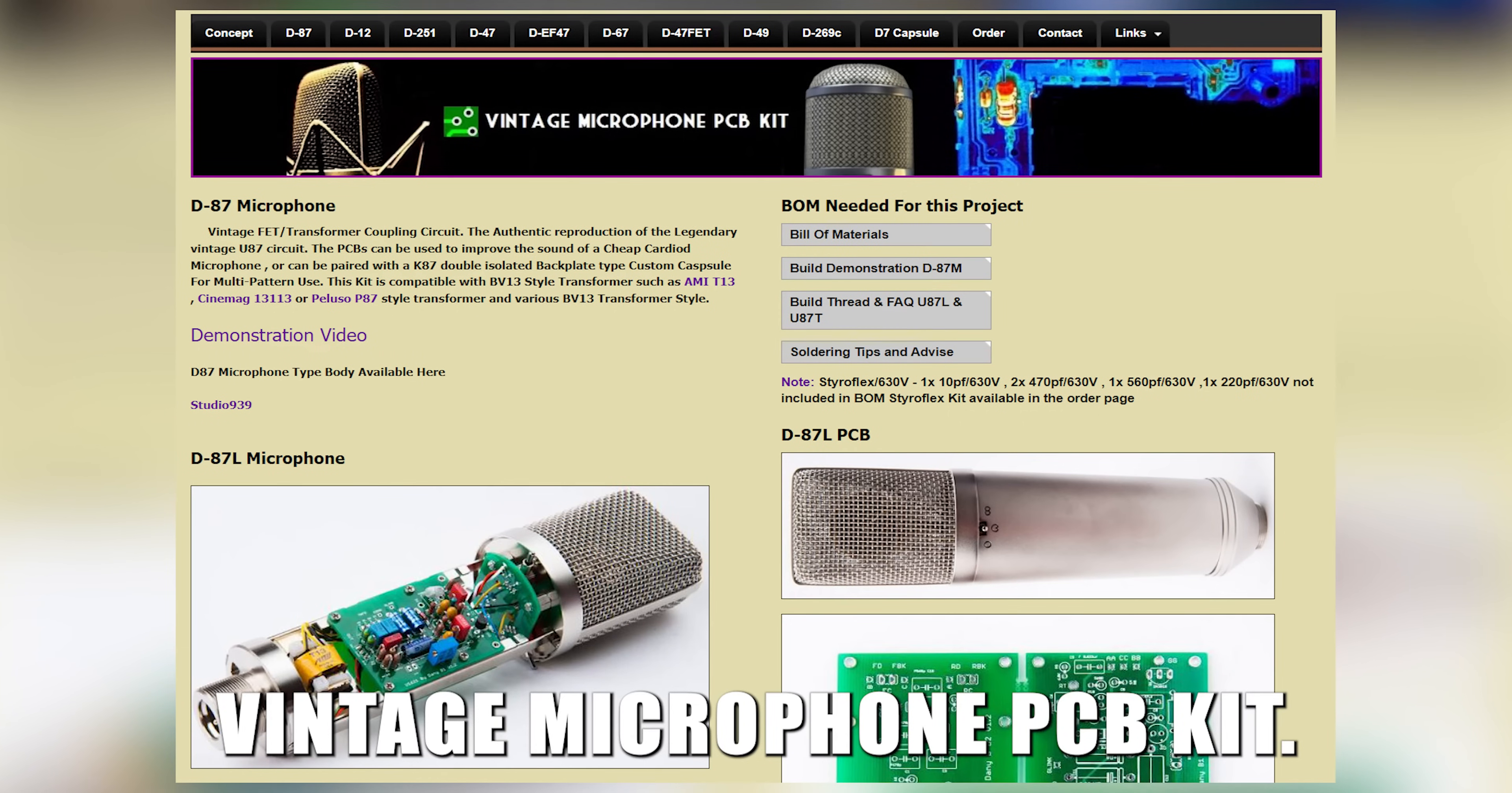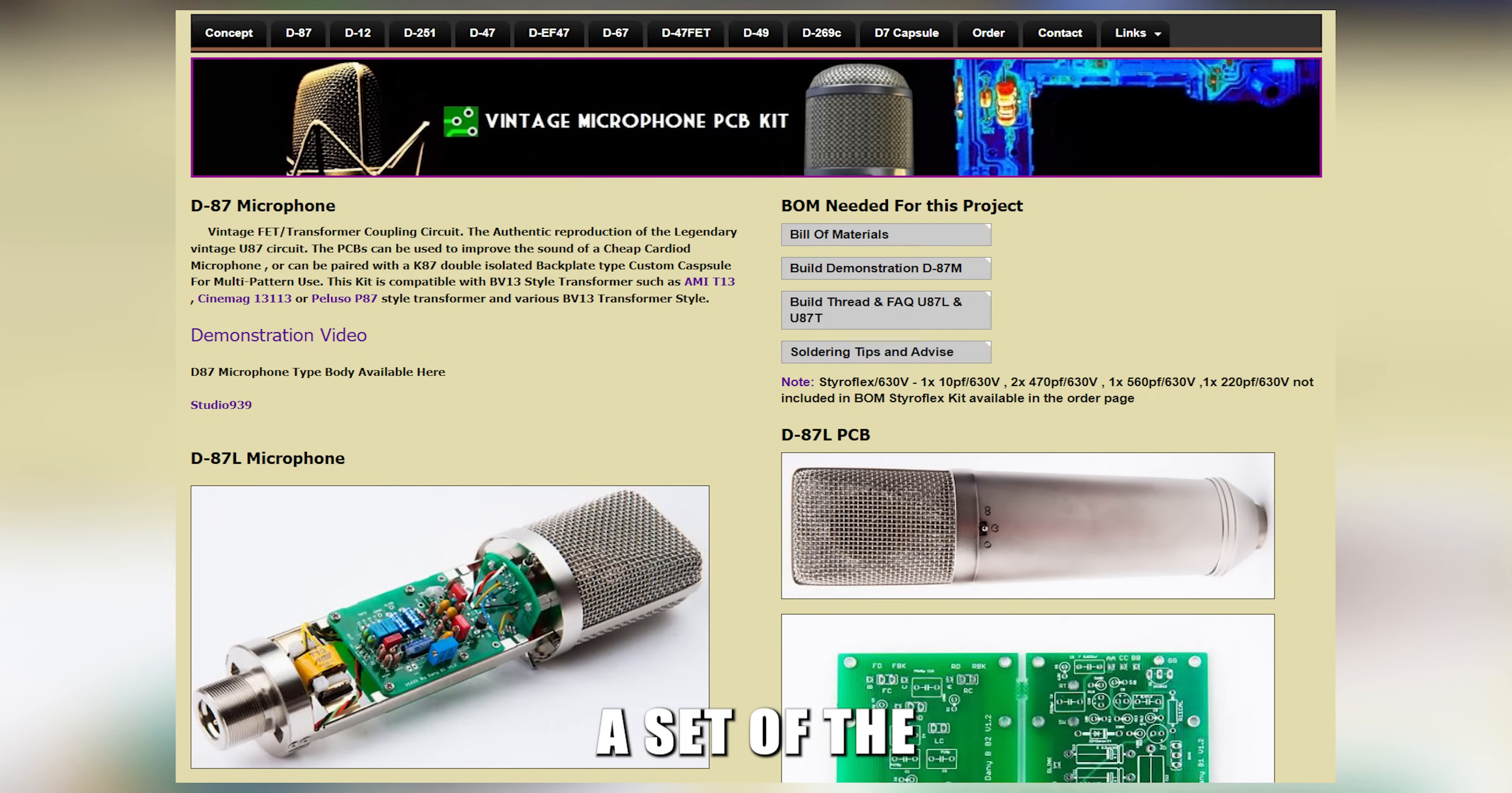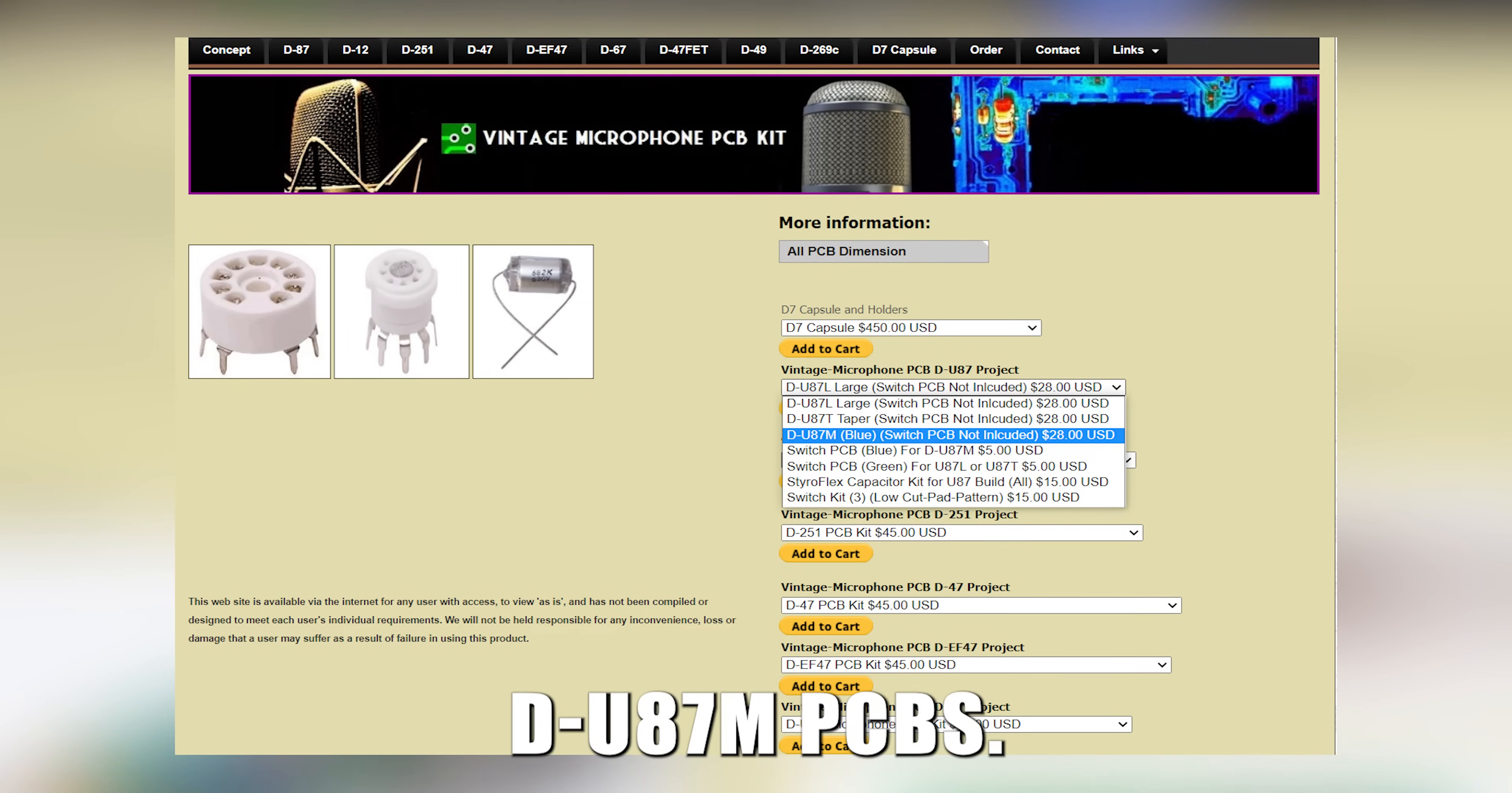The next step was ordering the right components. I used a website called Vintage Microphone PCB Kit. From them I ordered a set of the DU87M PCBs. These are blue PCBs that are full-sized, not tapered, and include a place to mount a transformer.